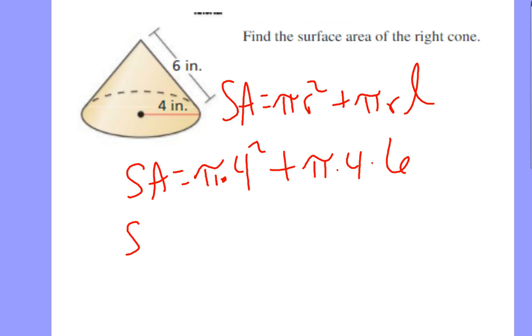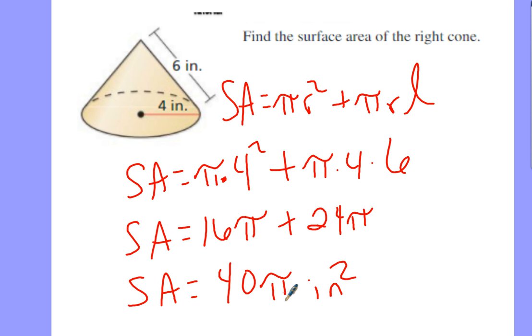So it will end up giving us 16π plus 24π and 16 plus 24 is 40π. And it is back to inches squared. And I'm going to leave it in π because π is exact right now. So we're going to leave it in π for right now.